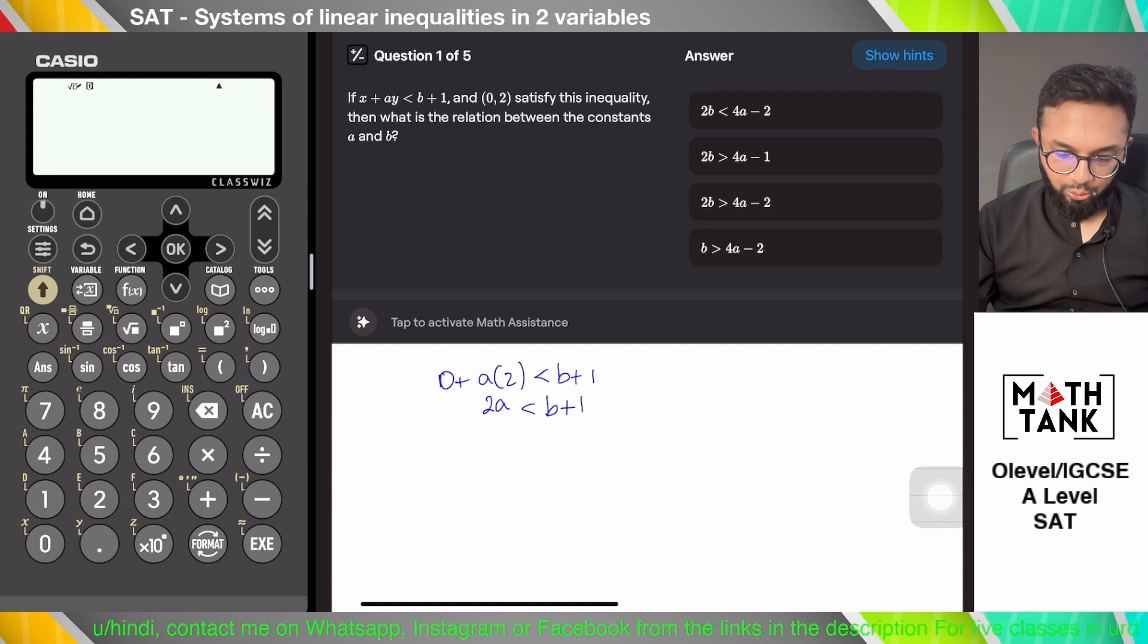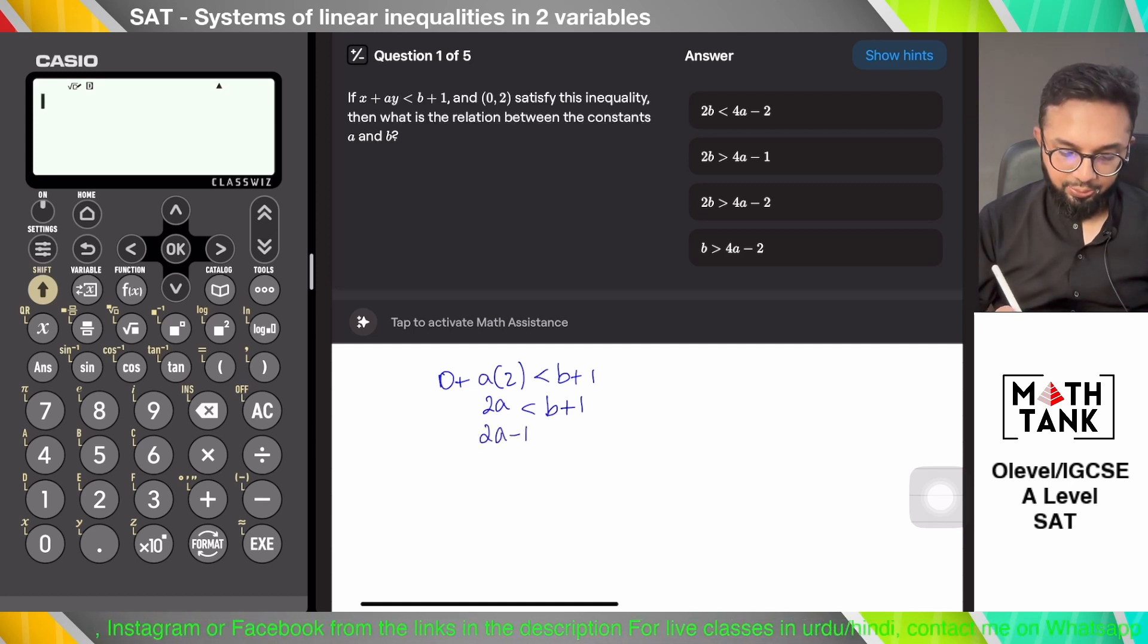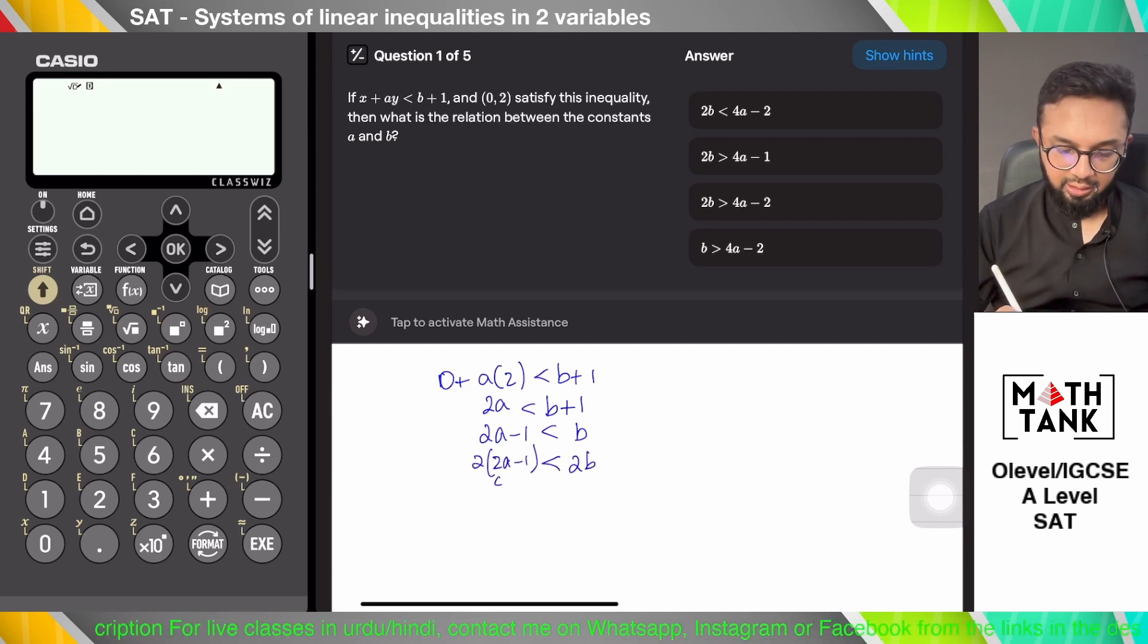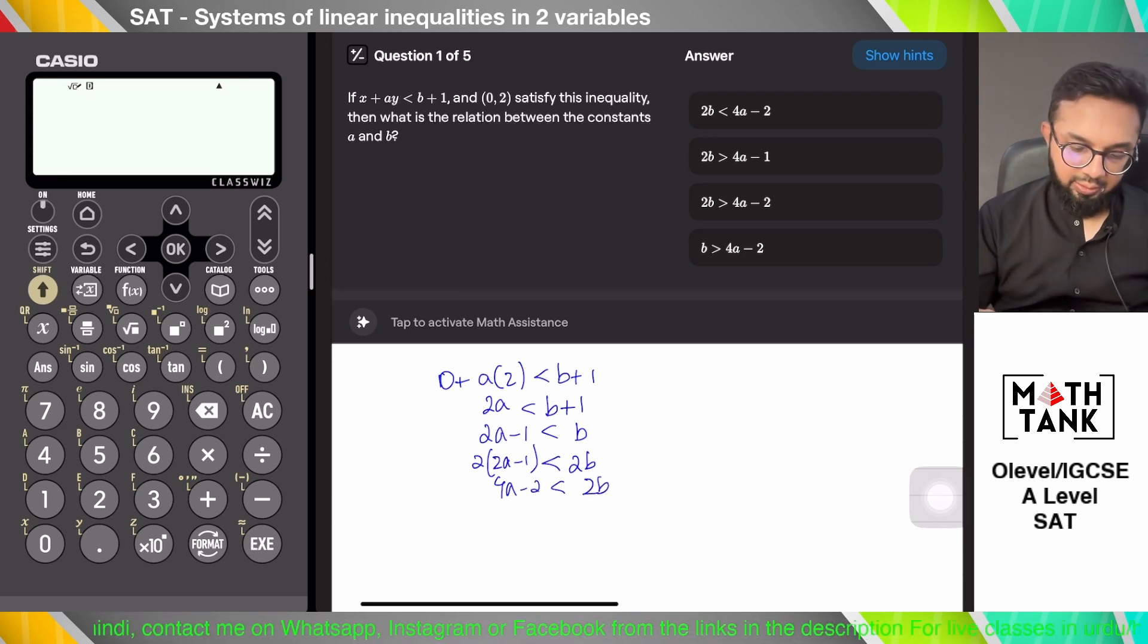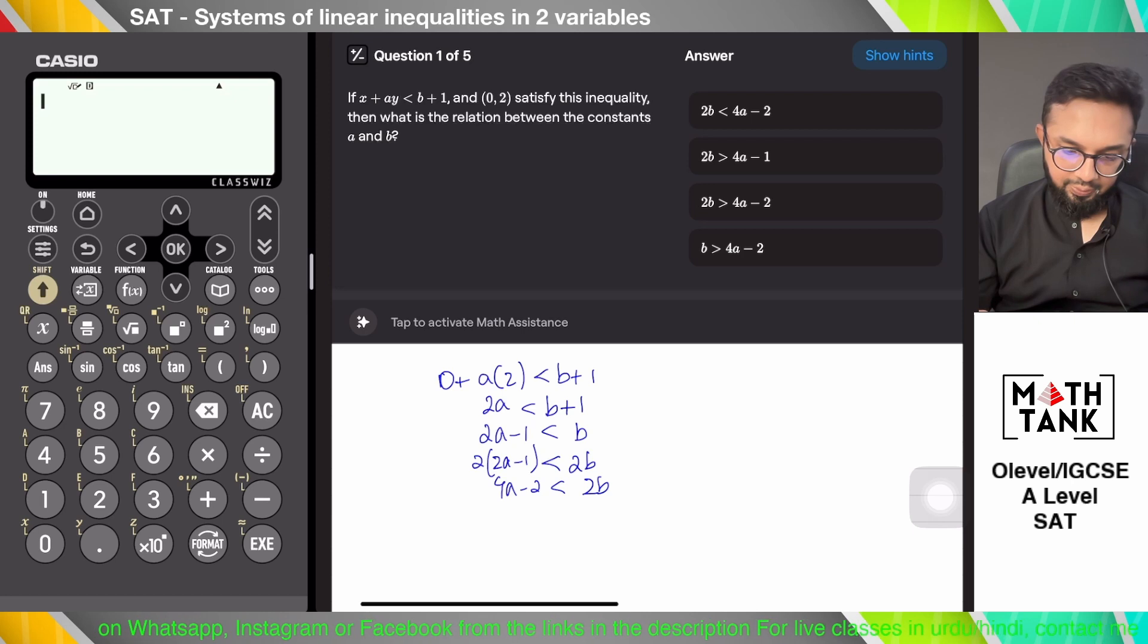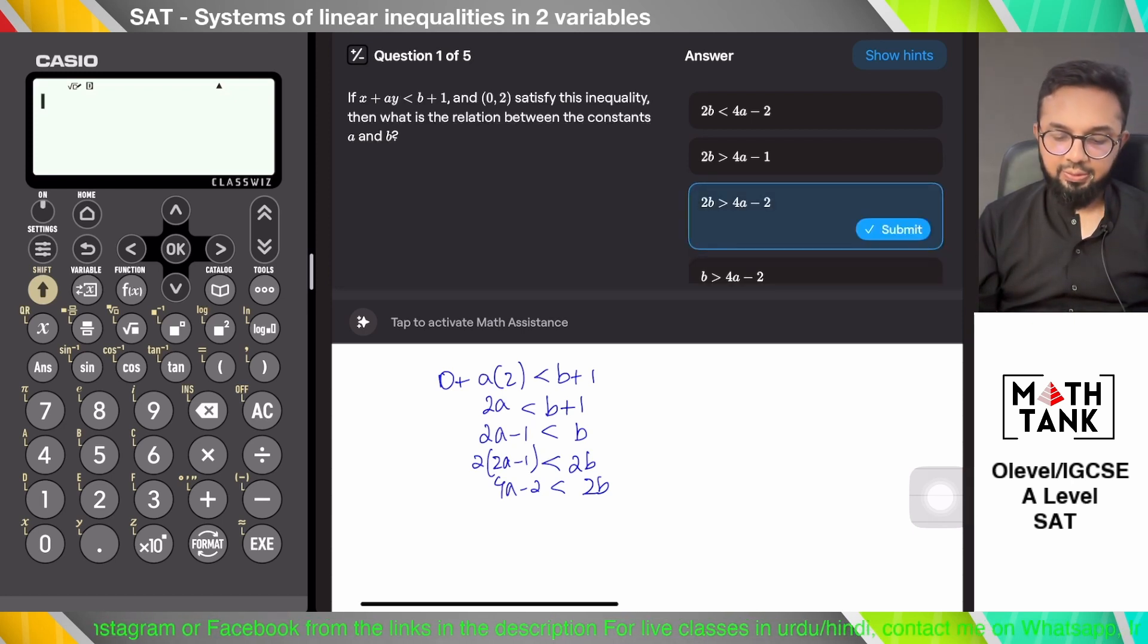Okay, so all of these are 2b. Let's see what I can do with 2b. If I multiply with 2 on this side, I should multiply with 2 on the other side as well and say that 4a minus 2 is less than 2b. So 4a minus 2 is less than 2b, or 2b is greater than 4a minus 2.